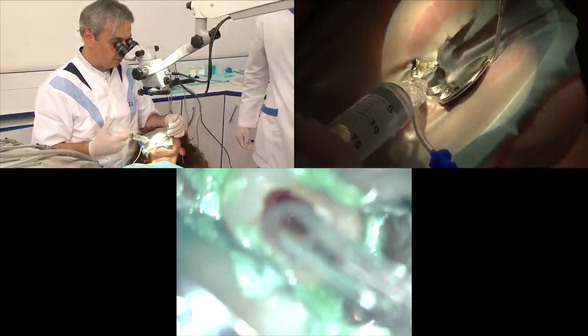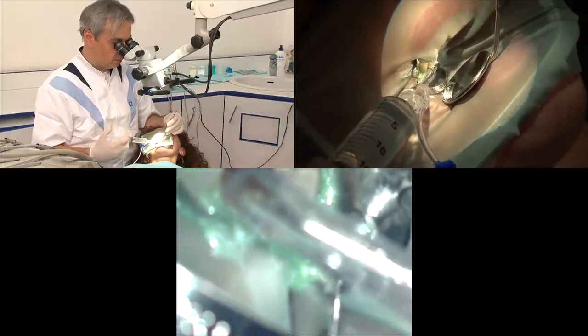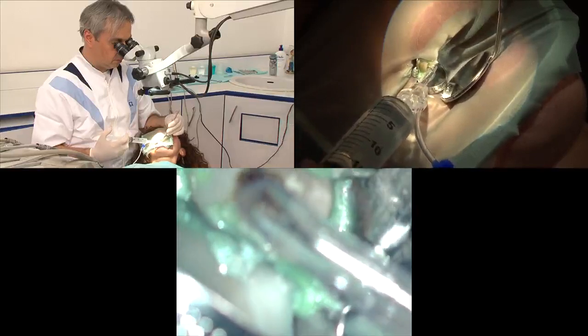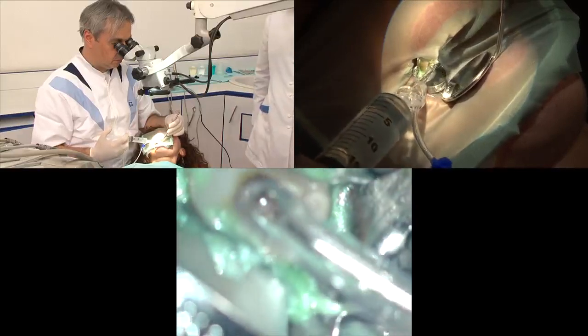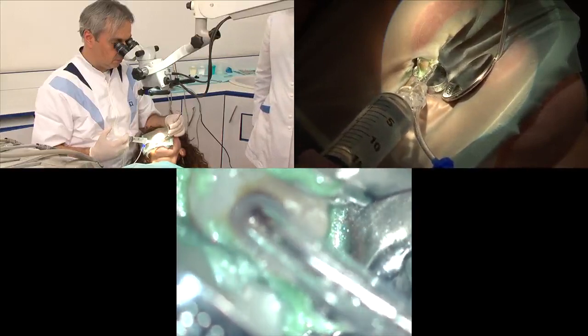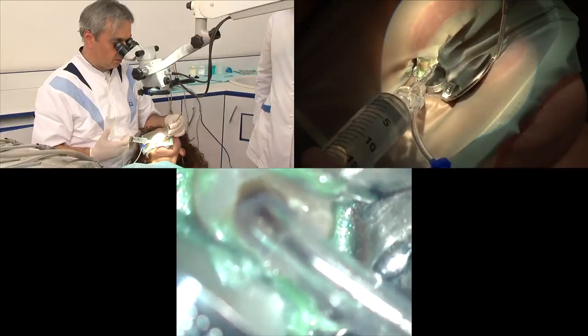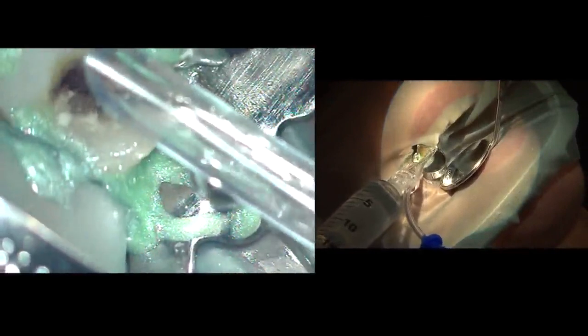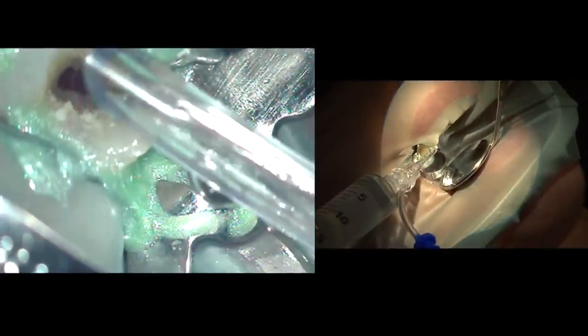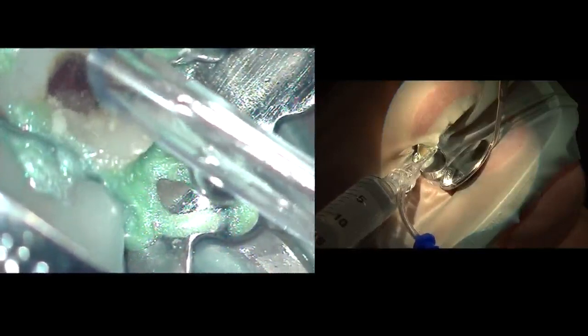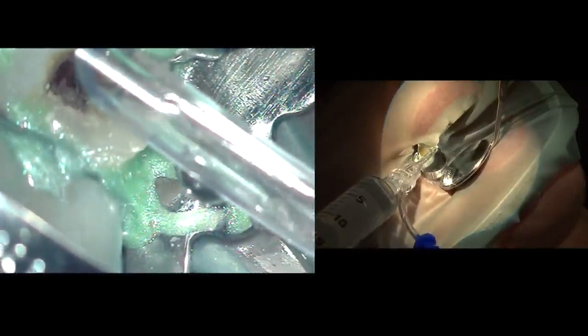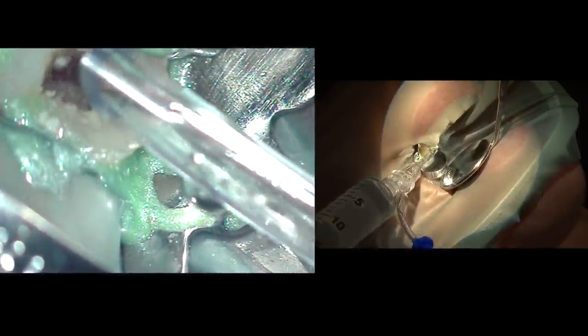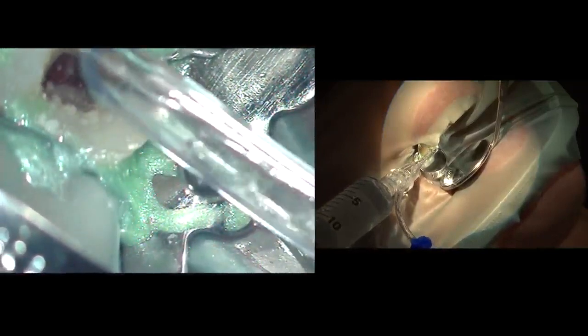The first step after opening the access cavity and finding the roots is to take the Indovac and to take all the debris to wash them out from the main access cavity. The tip of the master delivery unit must be angulated towards the walls of the access cavity. You can see here the flow of the irrigants coming out from the access cavity. Sodium hypochlorite is being delivered and then taking out.